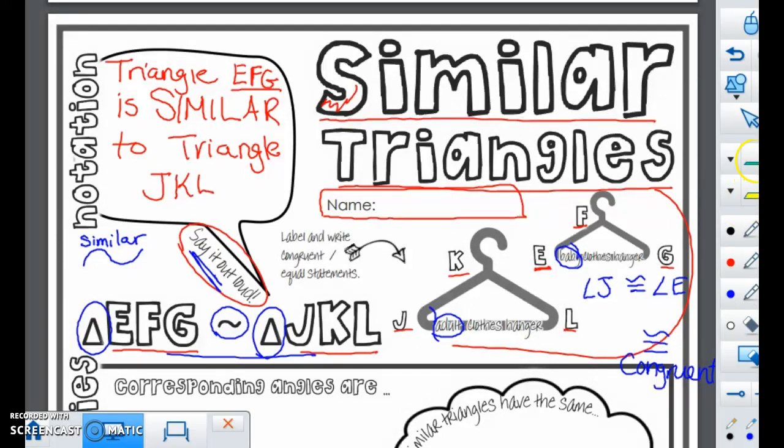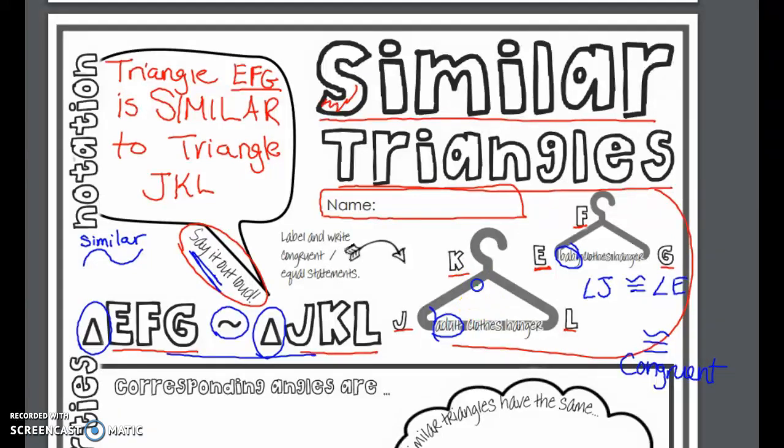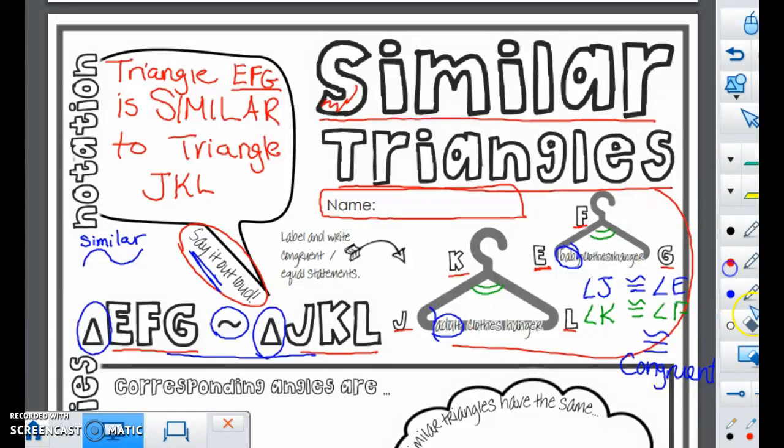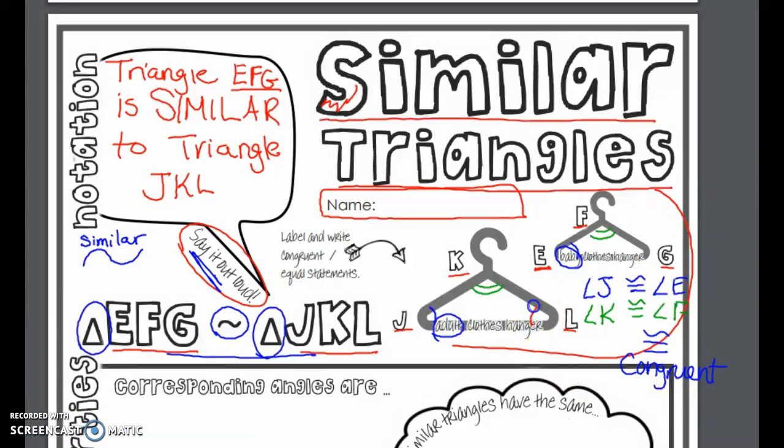So let's talk about some other angles. Angle K, I'm going to put two arcs there to show that angle K and angle F are also corresponding and congruent. Let's pick another color. Can I pick the red? Okay. Angle L, I'm going to use three arcs for that so we can differentiate them. Angle L is congruent to angle G. Okay, those are the angles. And the angles are always going to be congruent, always.